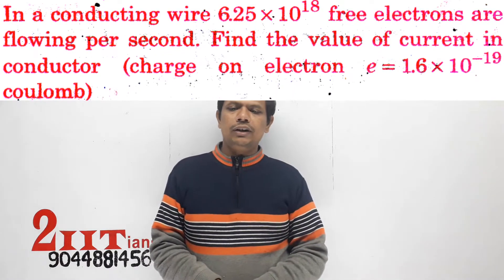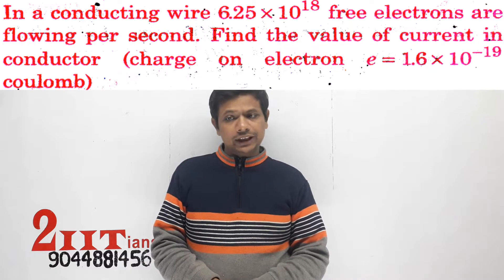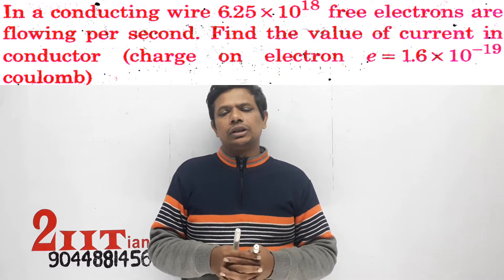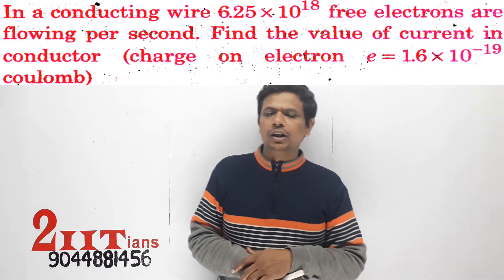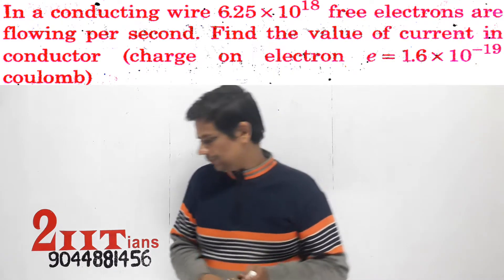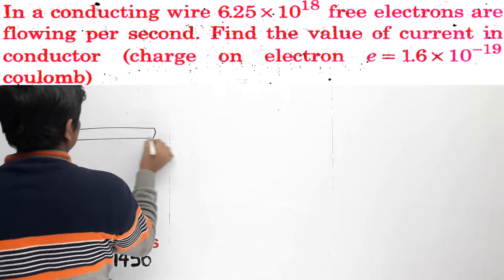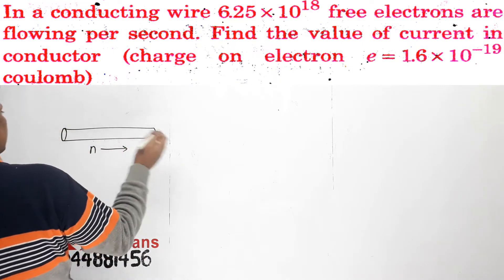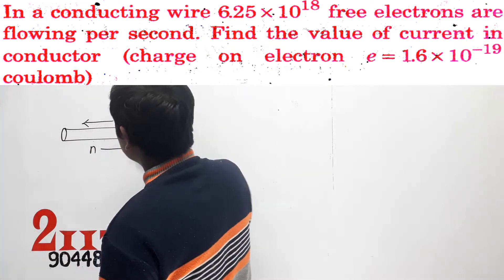In a conducting wire, 6.25 into 10 to the power 18 free electrons are flowing per second. Find the value of current in the conductor. The charge of one electron is given. The electrons are flowing in this direction, and current will be flowing in this direction. We are not much interested in the current direction.